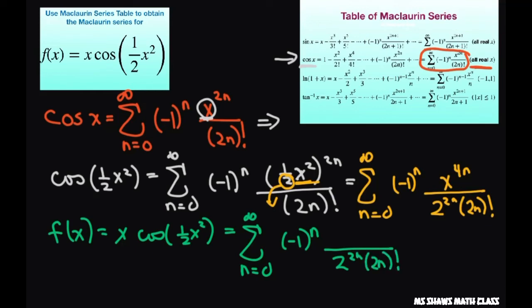But when you multiply this by x, so x to the 4n times x to the first power, it's just going to be times x to the power of 4n plus 1, using your laws of exponents.